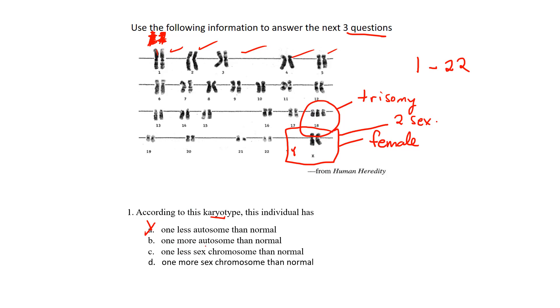It says one more autosomal than normal, and that one looks to be true. You can see that instead of just the two on the 18, the two homologous pairs, we have an extra. One more sex chromosome, that's not true. One less sex chromosome, that's not true. So we can see here that our answer is B.